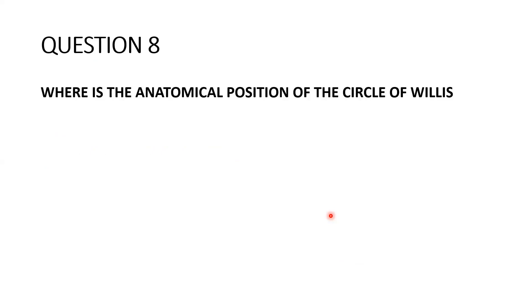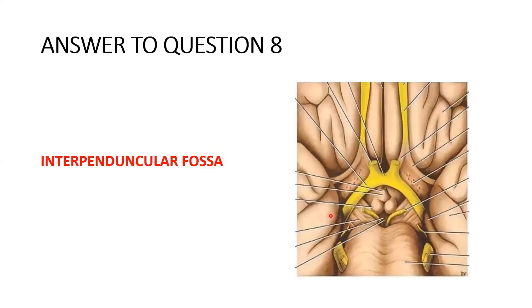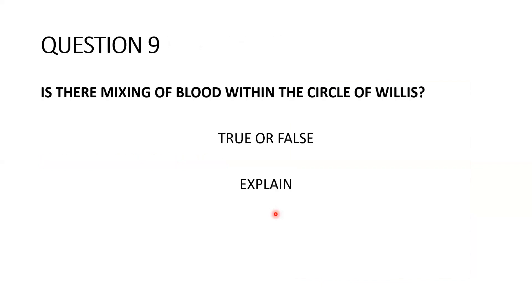Question eight: where is the anatomical position of the Circle of Willis? The answer is the interpeduncular fossa. In this region you can see the optic nerve crossing to form the optic chiasma, the infundibulum, below which is the tuber cinereum, the mammillary body, and the posterior perforated substance. This is the region — the interpeduncular fossa — where you find the Circle of Willis.